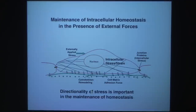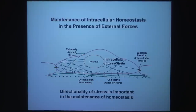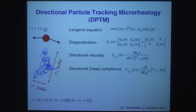The directionality of stress is very important in maintaining homeostasis. With a directional stress, you get remodeling and can change intracellular behavior including signaling. Without direction — as in disturbed flow regions — you don't have this feedback.